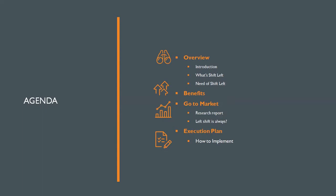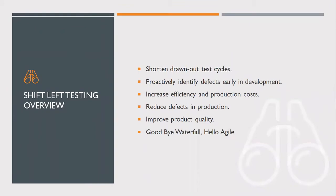If you are new here, consider subscribing and pressing the bell icon for further updates. When talking about shift left testing, agile practices are being adopted almost universally. It is a necessity that faster, earlier testing in the software development life cycle brings development and testing together early — this is commonly referred to as shifting left. By testing early in the process, we can fix defects before they grow into bigger problems, placing the emphasis on quality from the start.